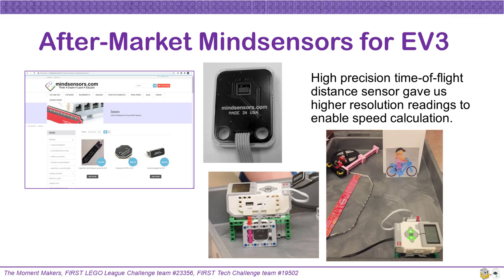As we tested our prototype, we found that the standard EV3 ultrasonic sensor could not measure speed as well as we needed it to. However, there are aftermarket companies, such as MindSensors, that sell products that will work with LEGO robotic systems. These aftermarket parts are not legal for the robot game, but they can be great for project prototypes. We ordered a high-precision time-of-flight distance sensor from MindSensors. MindSensors also has pre-made blocks for the special parts that can be imported into the EV3 lab software. We could then calculate speed at higher precision and analyze the results with our EV3.